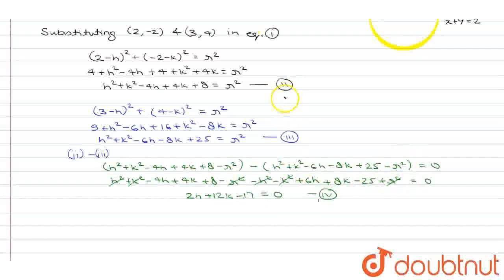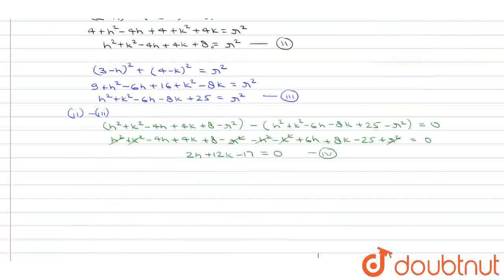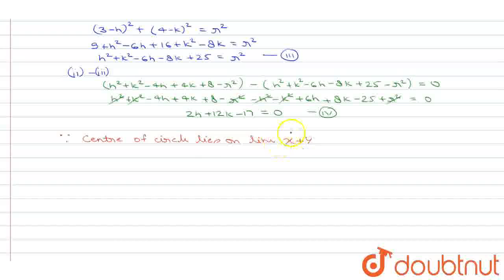In the question, it is given that the centre of the circle lies on the line x plus y is equal to 2. Therefore, the coordinates of the centre must satisfy this line. So we get h plus k is equal to 2. This is equation number 5.